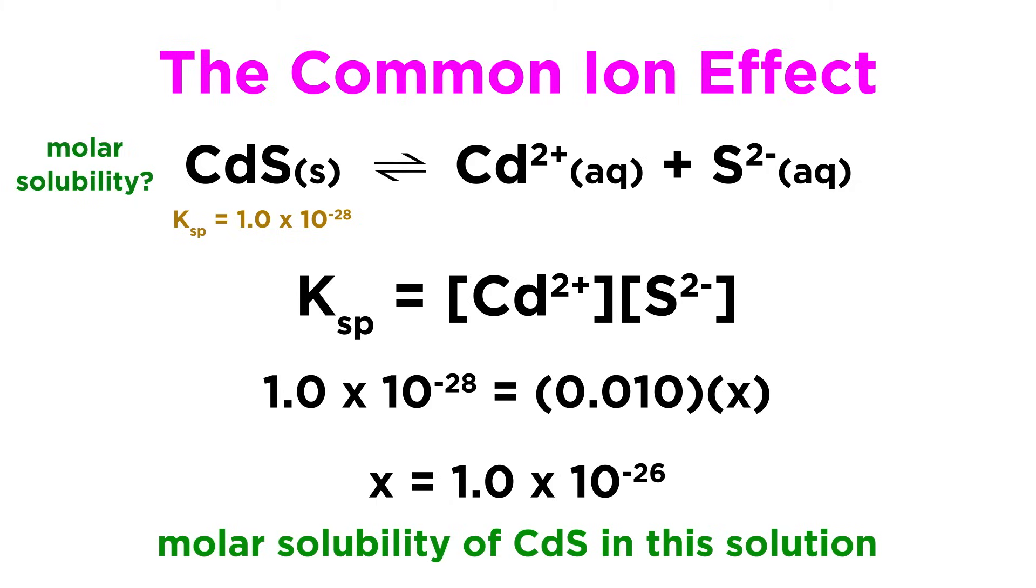Solving for X, since the sulfide concentration will be equal to the molar solubility of cadmium sulfide, we get a molar solubility of 1.0 times 10 to the negative 26.